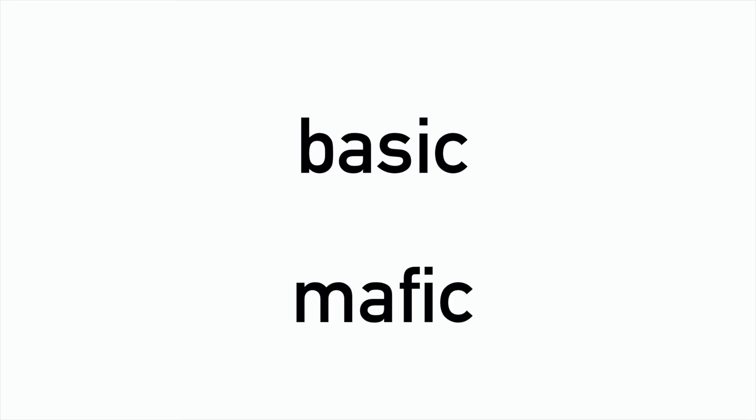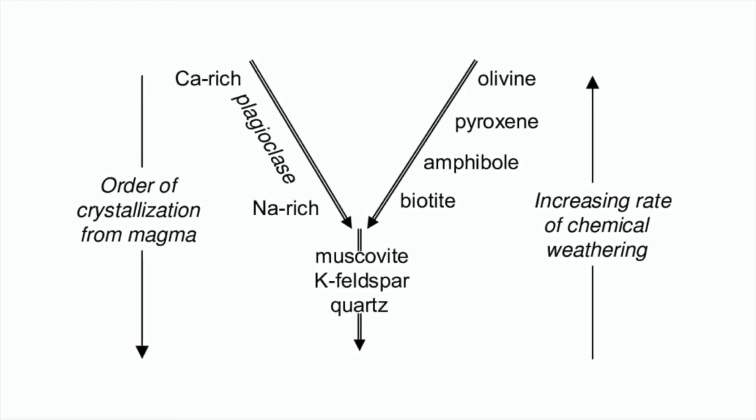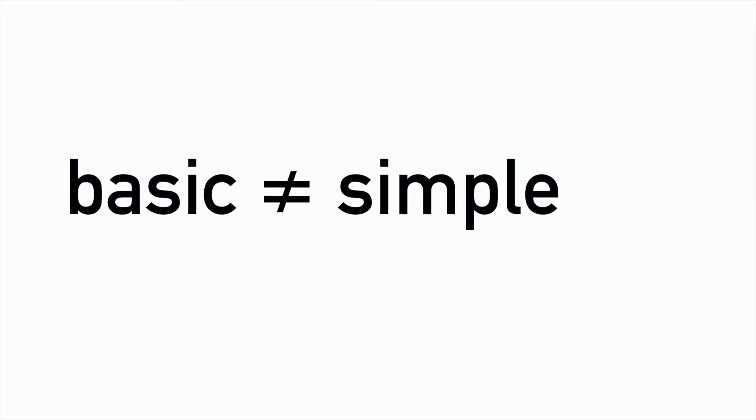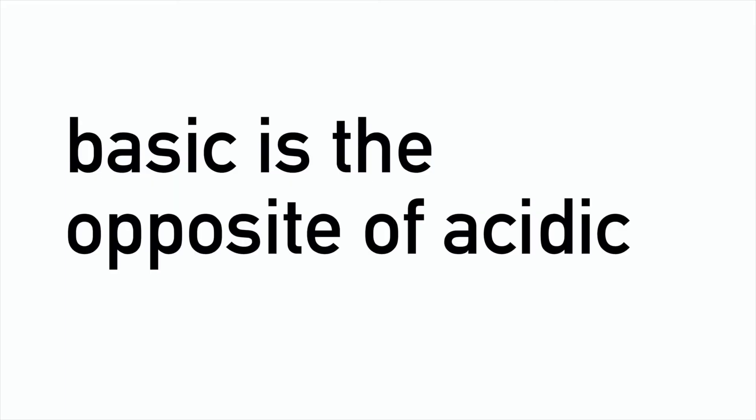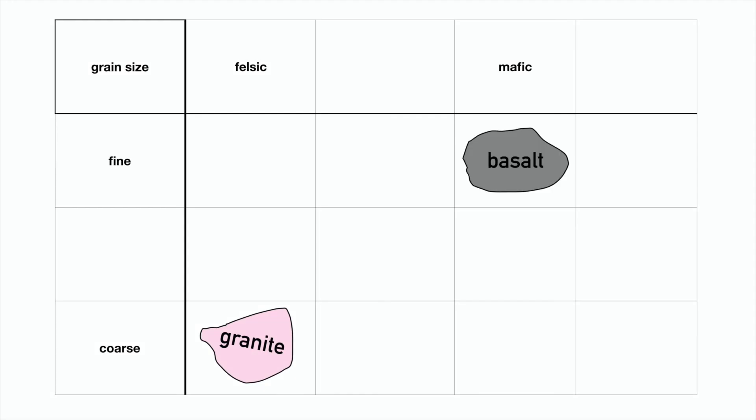Basalt is at the other end of this spectrum. It's fine-grained and described as basic or mafic. Therefore, it takes minerals from a much higher point in Bowen's reaction series — minerals like amphibole and pyroxene, as well as plagioclase feldspar, which is common in a basalt. It's really important to understand that when I say basic, I don't mean simple — I mean a compositional chemistry that's opposite to acidic or felsic. Basalt would therefore go here on the table.